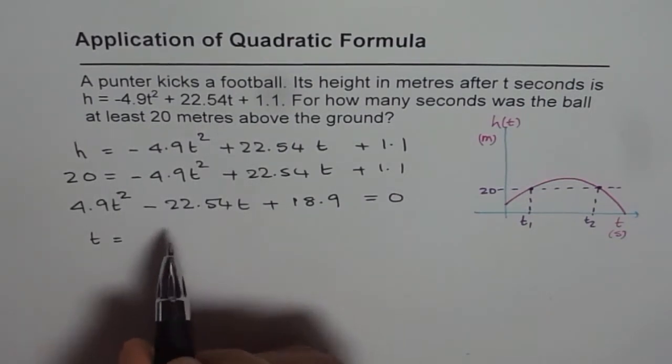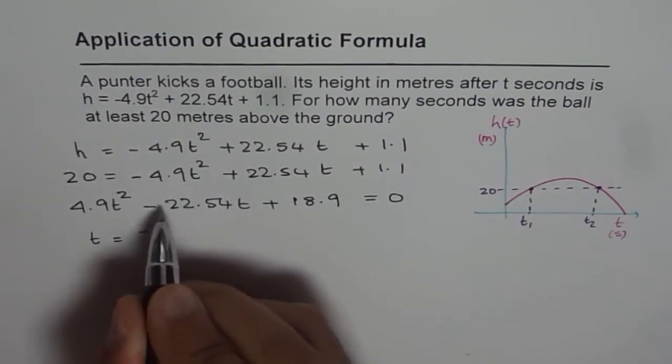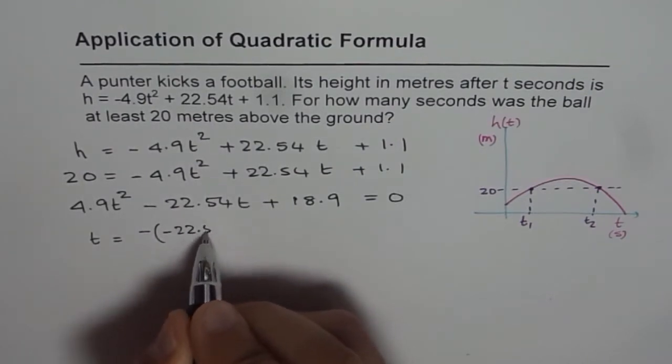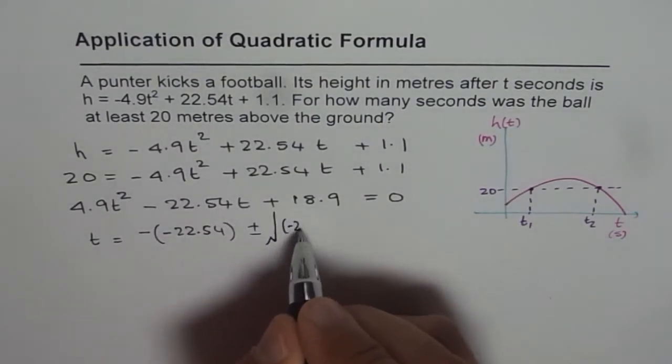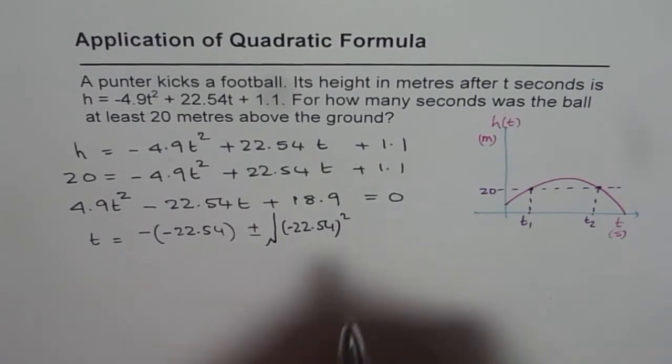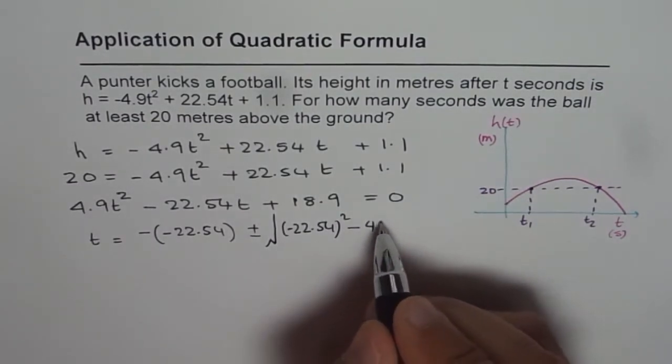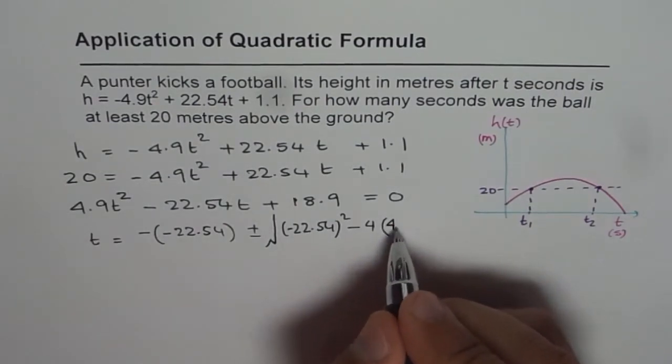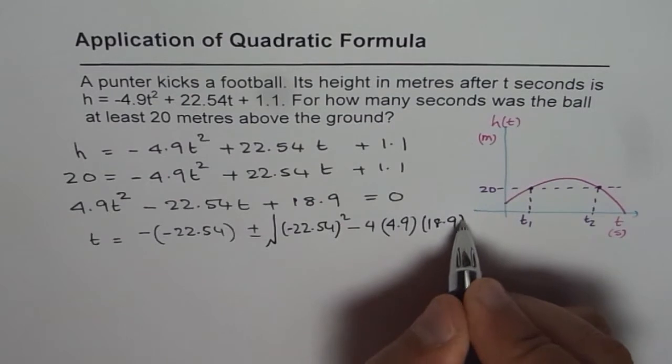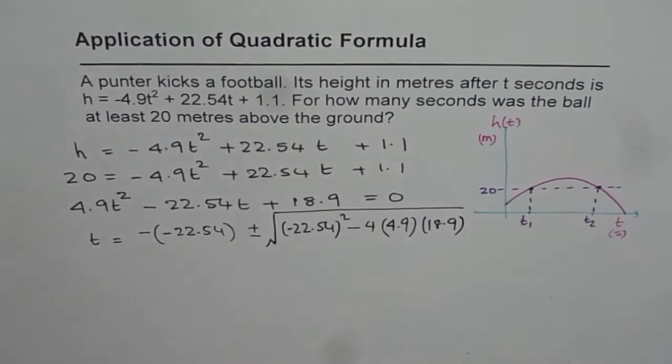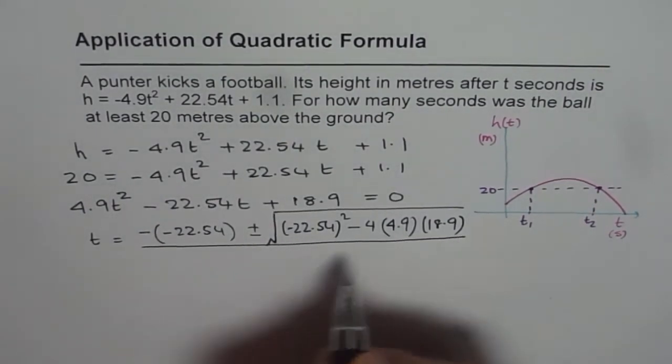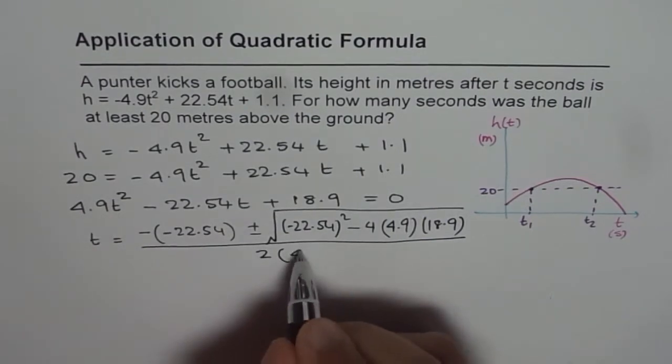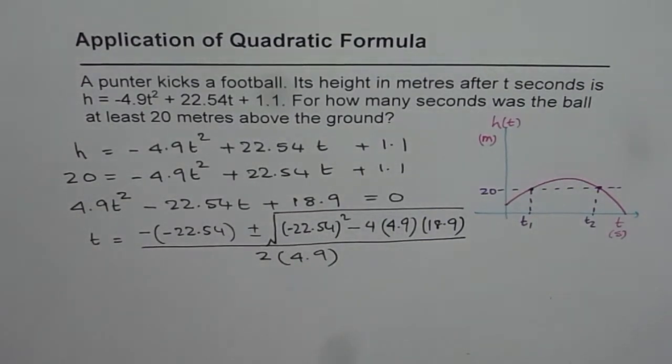So t equals minus b, b value is minus 22.54, so let us write minus and b is minus 22.54, plus or minus within square root, b squared, which is minus 22.54 squared, minus 4 times ac, which is 4.9 times 18.9. So that is the numerator and the denominator is divided by 2 times a, 2 times 4.9. So that is the equation which you get.